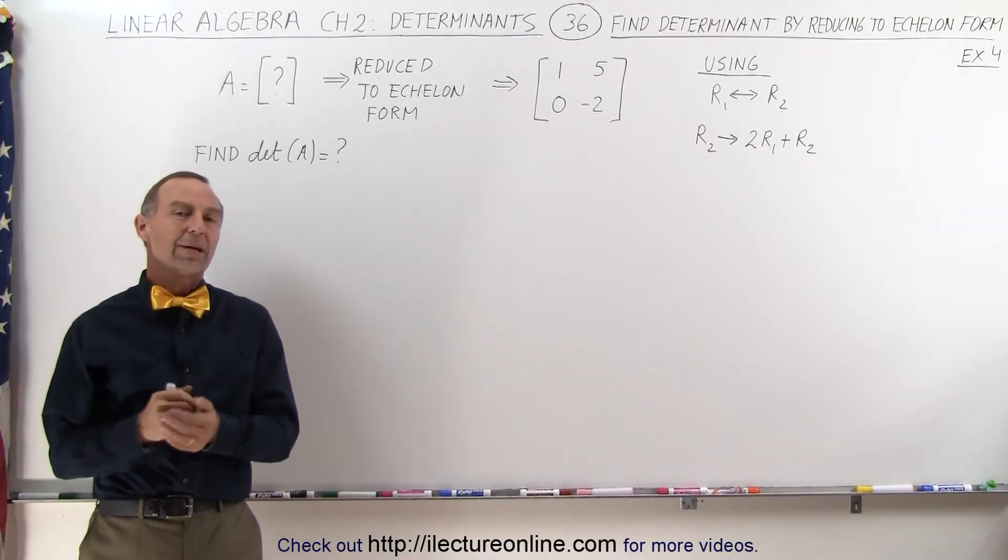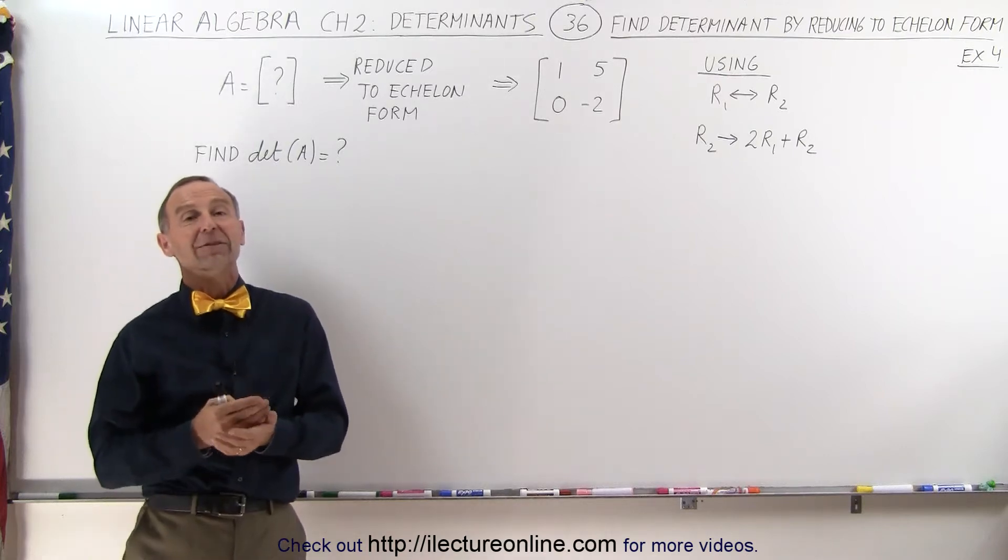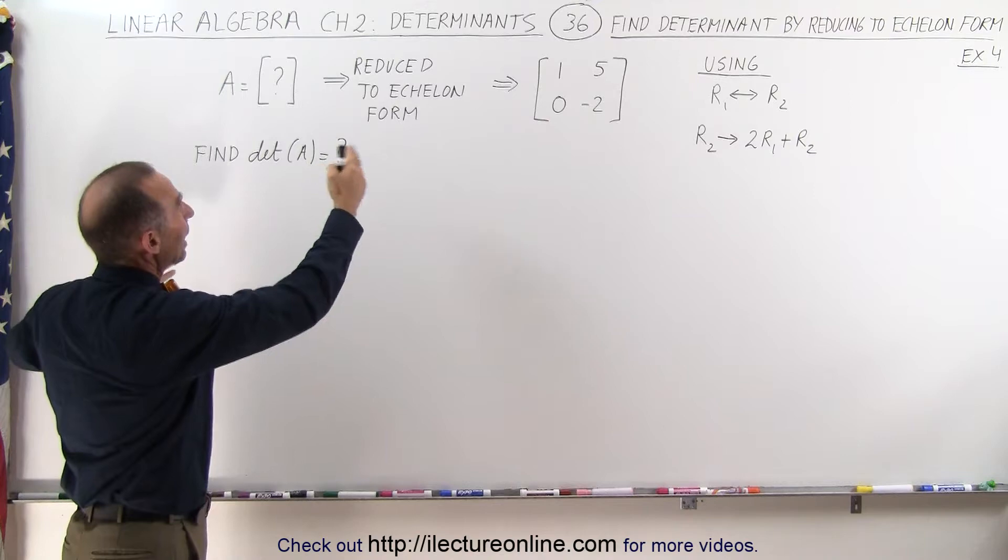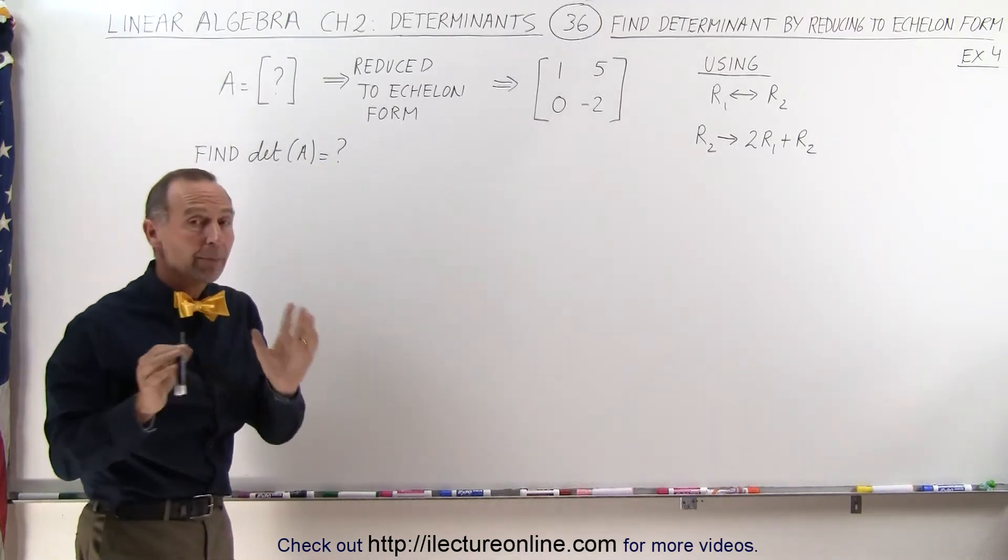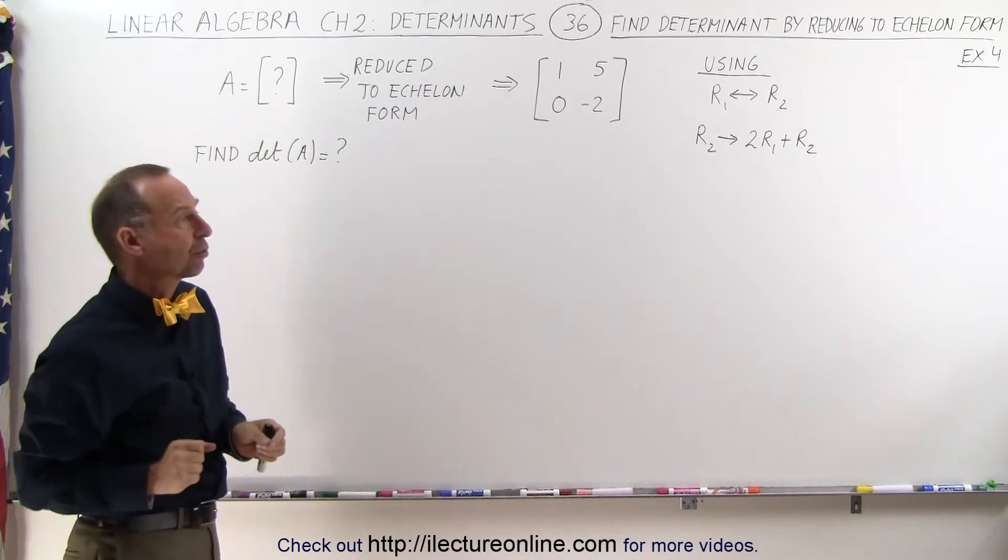Welcome to ElectronLine. Here we're going to see if we'd remember the rules or understand the rules of how to find the determinant of a matrix by reducing a matrix to the echelon form, and then remembering the process we took to get there to make sure we adjust the answer appropriately.